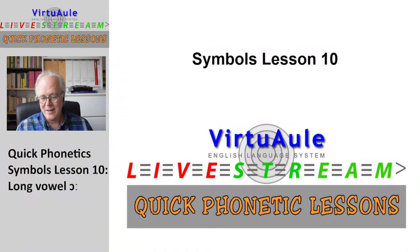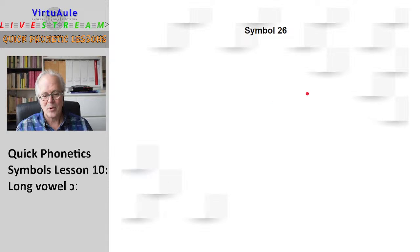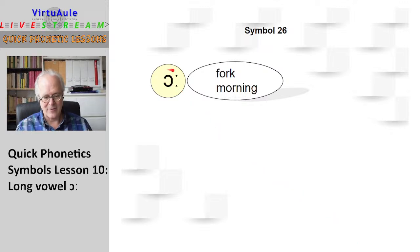No jingle today. Let's go directly to the presentation. We are going to see symbol 26, which is a long sound. It's a vowel — the yellow behind it signifies that it's a vowel. The colon, or the two dots after, gives you the idea that this is a long vowel sound.